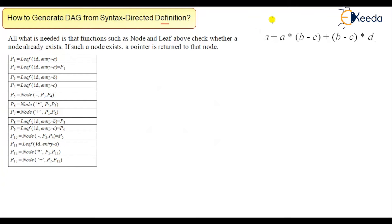I have taken an example here and I want to generate the DAG for this expression. There are only two functions: there is a leaf and there is a node. Using just these two functions, we will be able to generate the DAG.